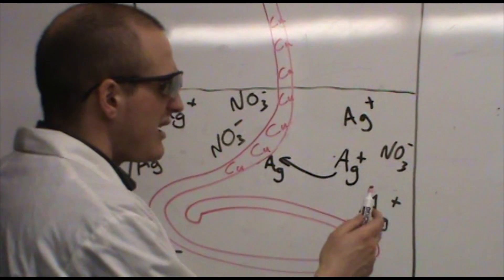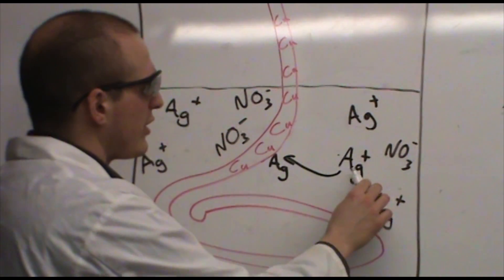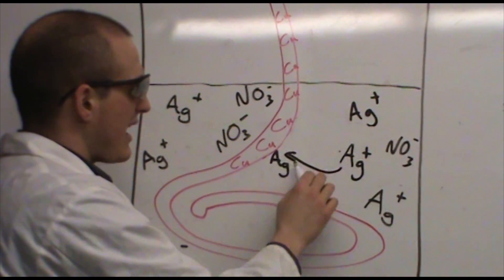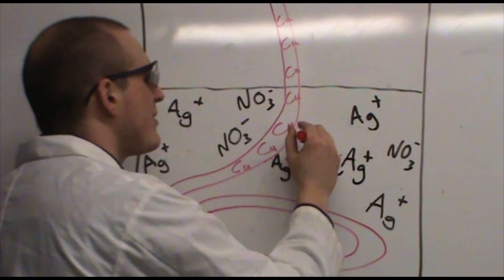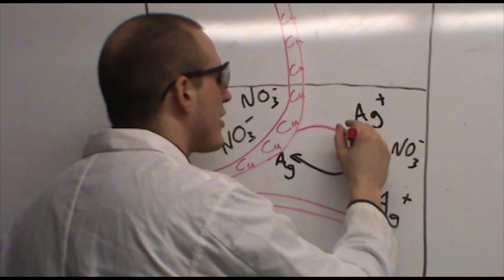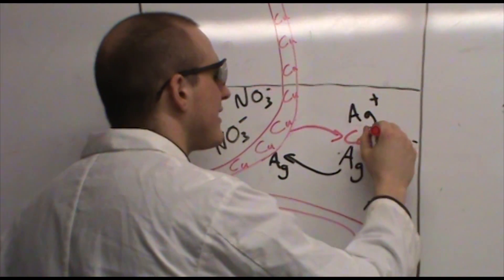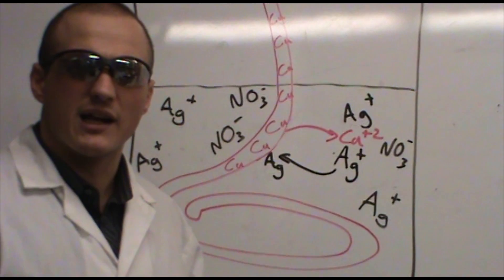What this does is it allows the silver to neutralize its charge and collect as solid silver on the copper wire. At the same time, the copper atoms are replacing the silver in solution as a cation.